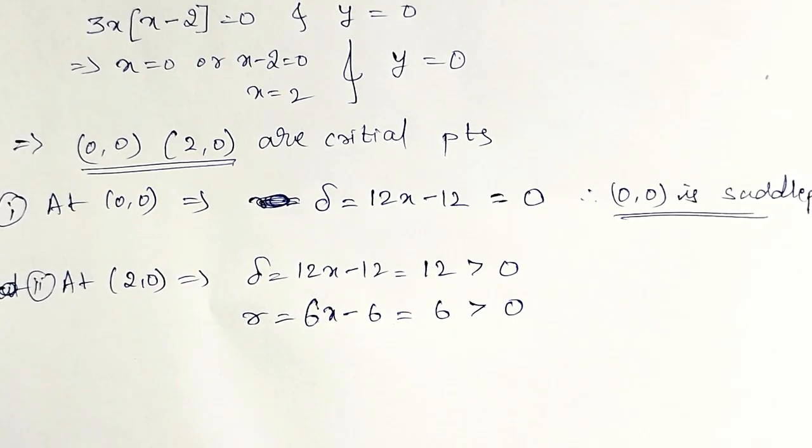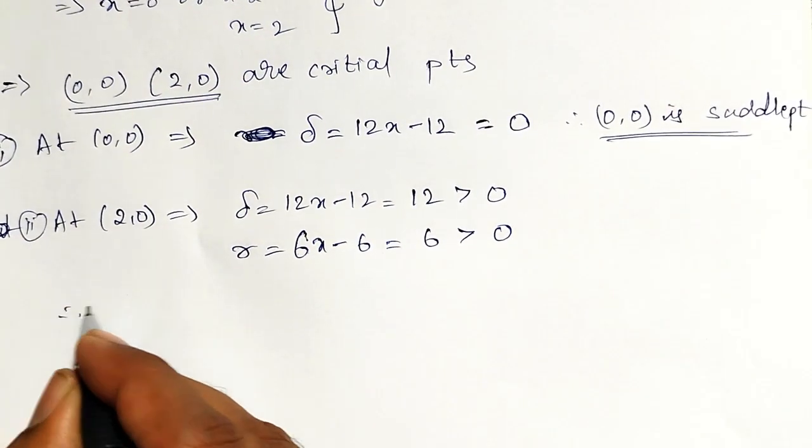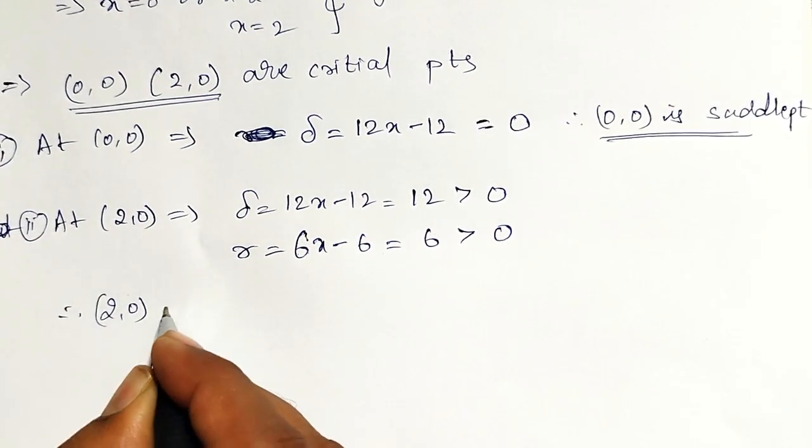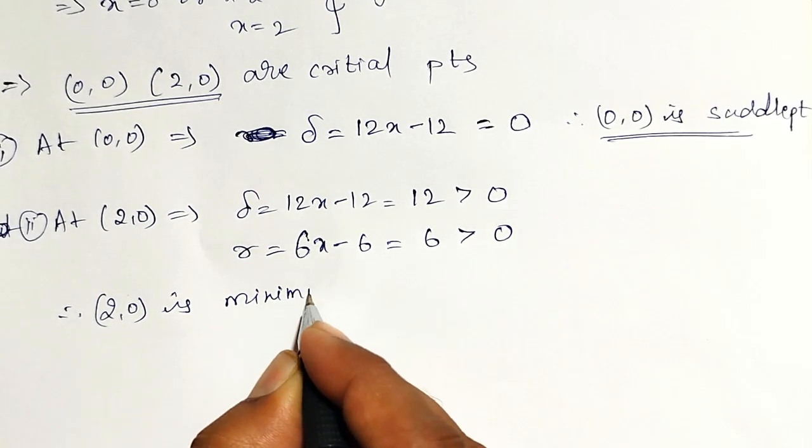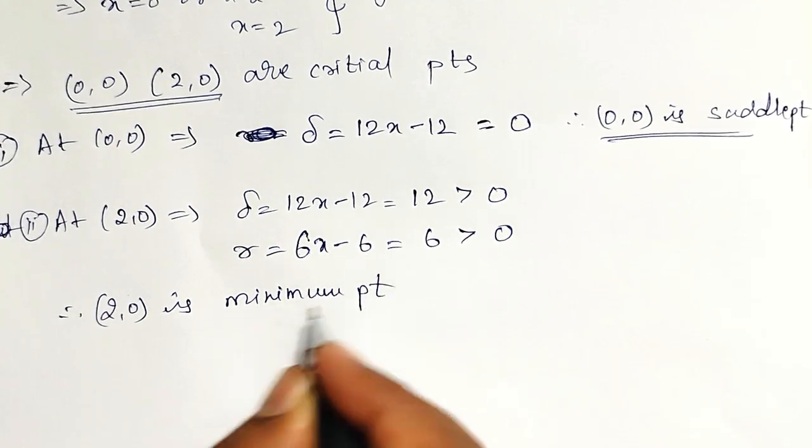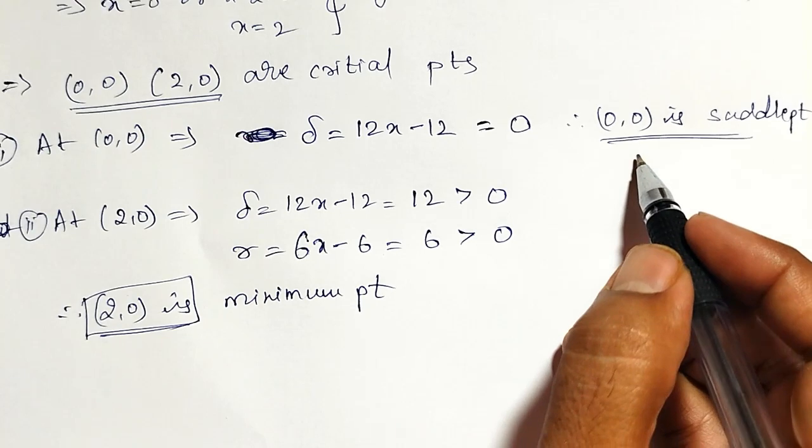That is 6x minus 6. Therefore, it is also 12 minus 6 is also 6. Greater than 0. Both delta greater than 0. And r is also greater than 0. Therefore, 2, 0 is minimum point. This is the minimum point.